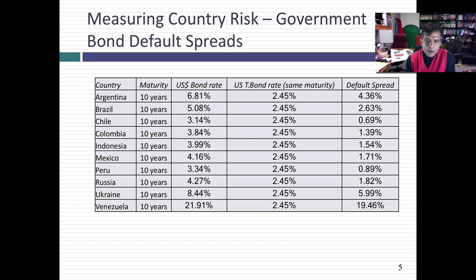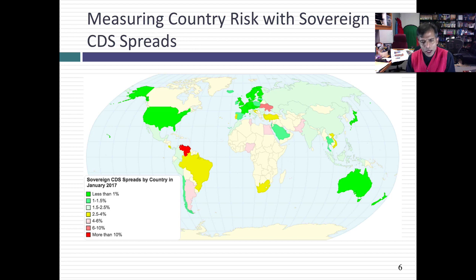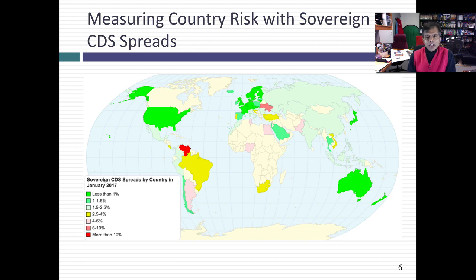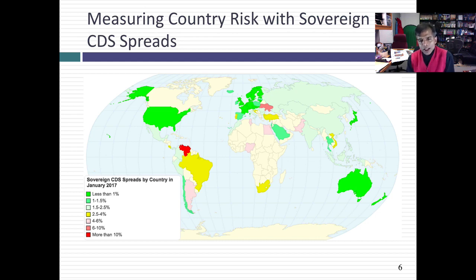So these are measures of default risk obtained from government bonds. The advantage of this approach, as opposed to using a rating, is it is a market-set number, but it's available only for a small subset of countries. Which brings me to a third approach: sovereign CDS spreads. Sovereign credit default swap spreads are basically insurance that you buy against default risk, stated in annual terms. For Brazil, the sovereign CDS gives you the amount you'll have to pay each year to protect against default risk — think of it as a measure of default spread. It's current, market-updated, and volatile like all market numbers, but it's available for about 60-plus countries.